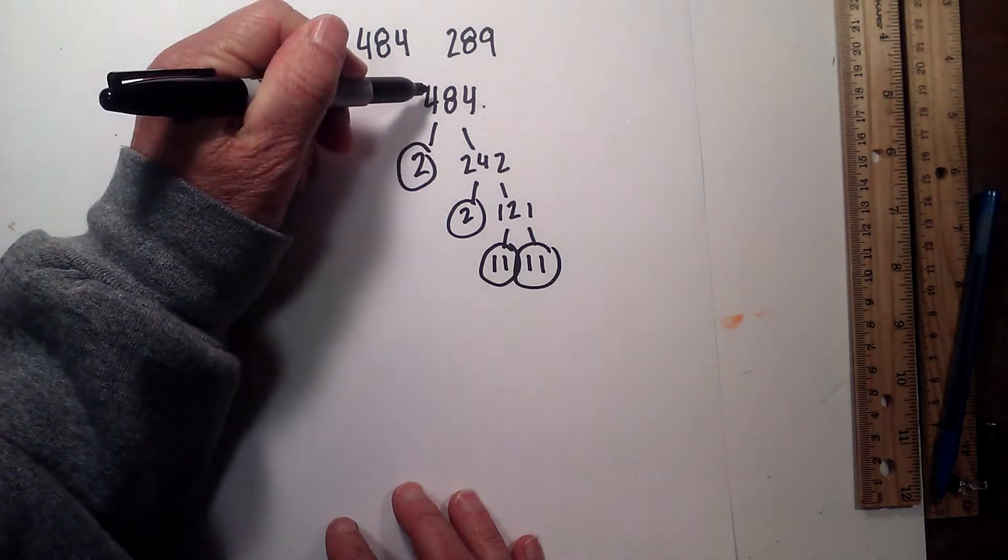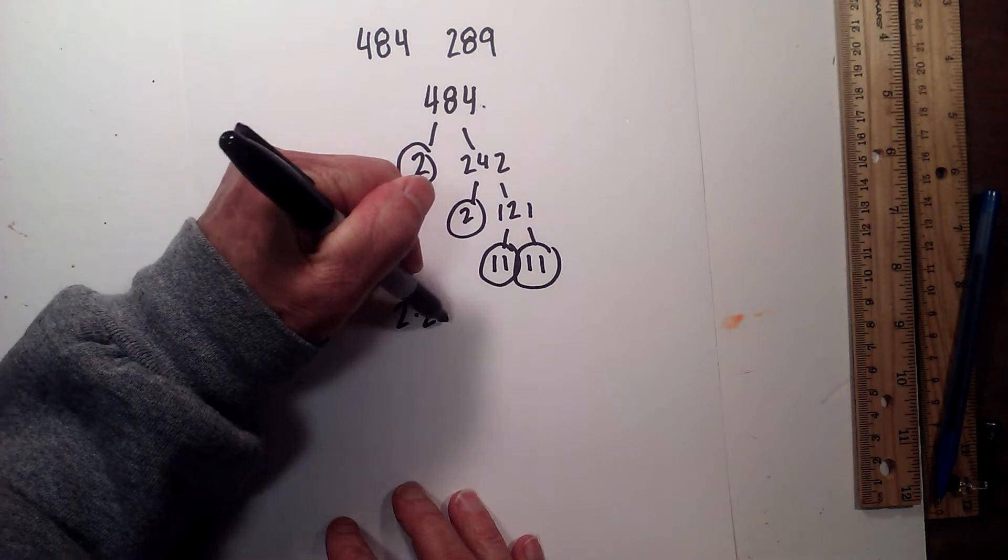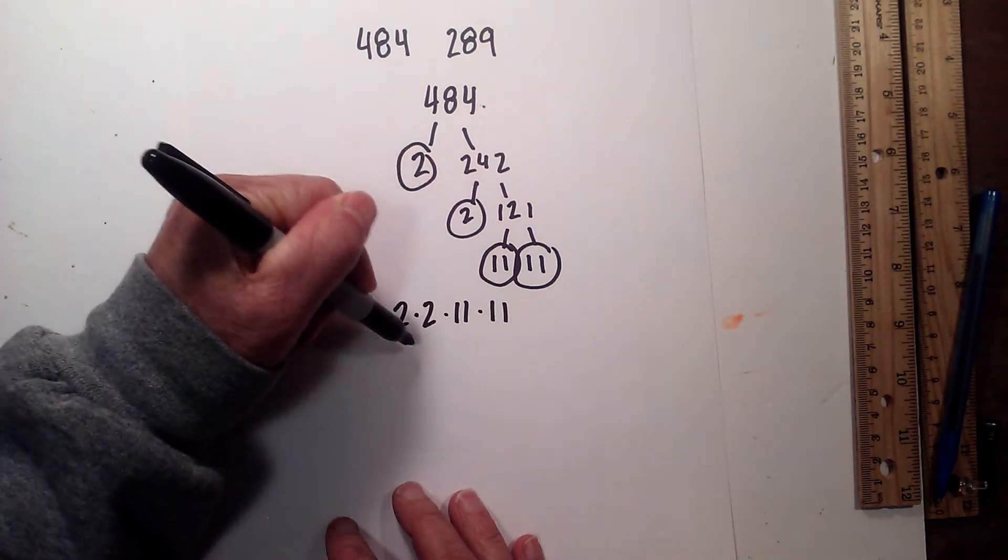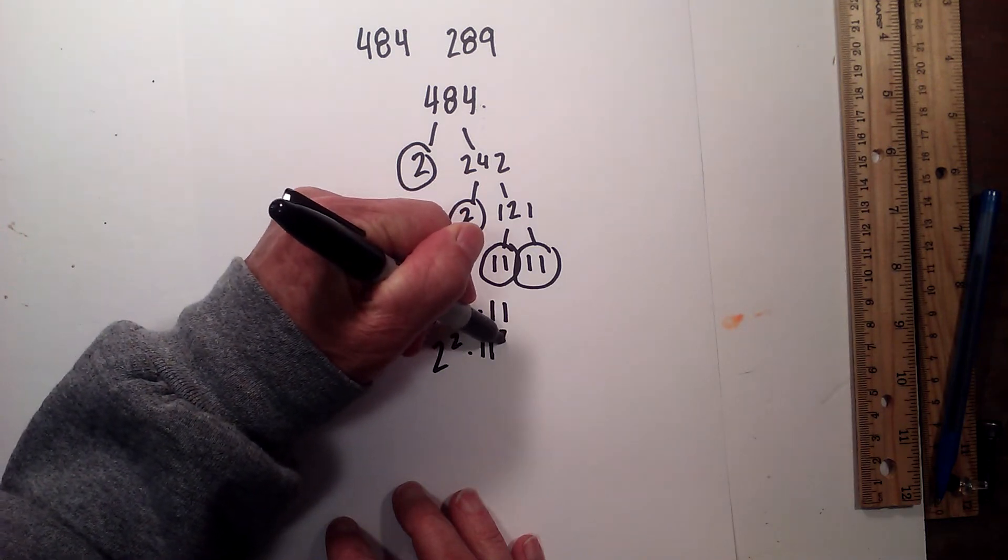So now the prime factorization of 484 is 2 times 2 times 11 times 11, or you could write this as 2 squared times 11 squared.